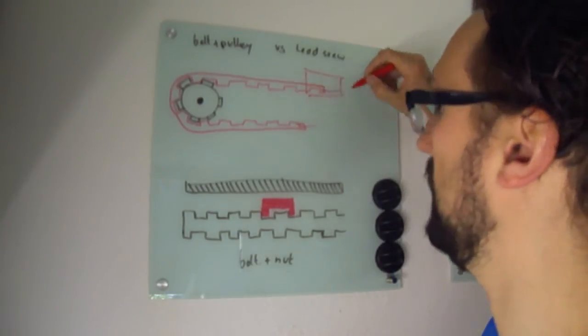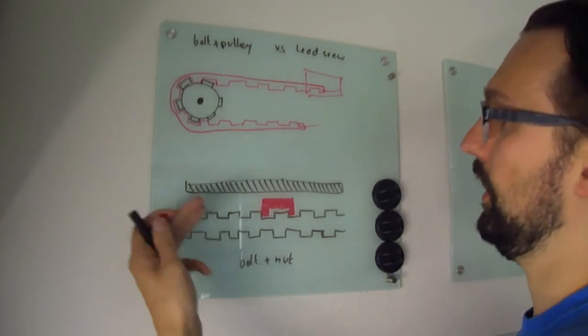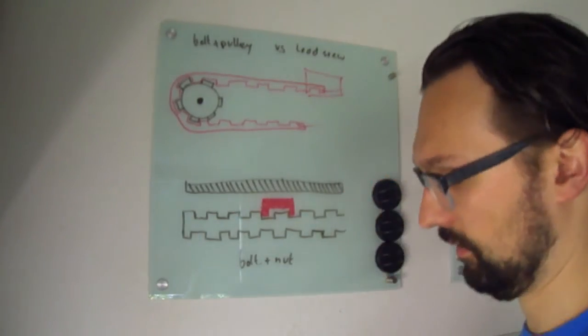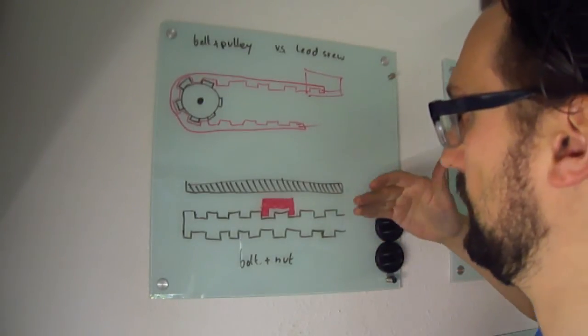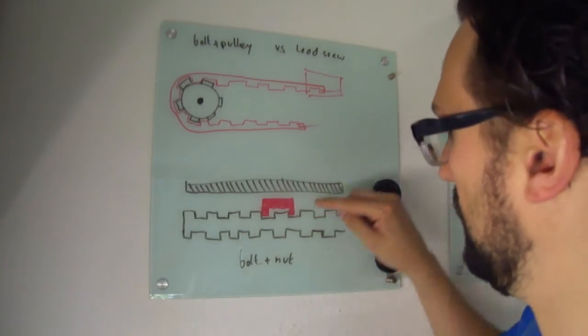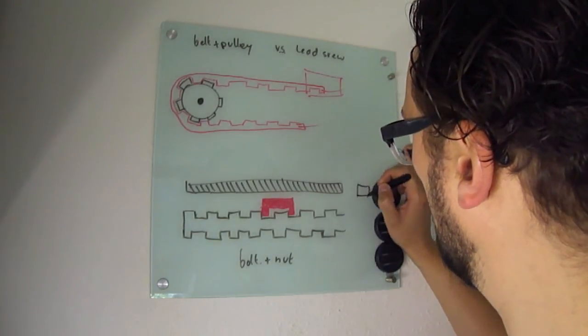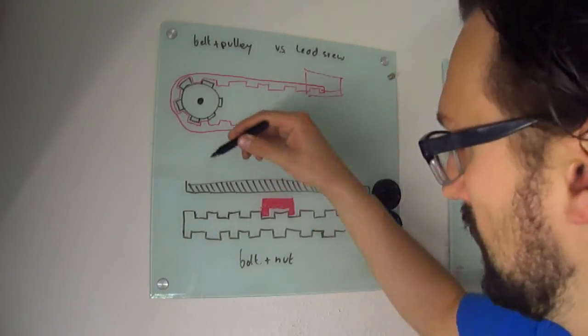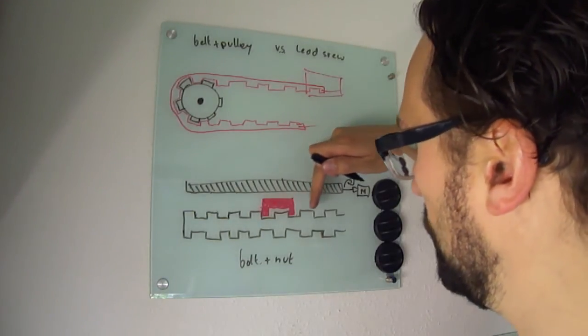And the other one is the lead screw or the bolt and nut basically solution. Why you have a very big lead screw or a very big bolt and then you have a nut on top of it. So if you rotate this, in this case the motor will be here, and you mount it here and then it rotates. So as this rotates the red thing which is the nut will move back and forth.